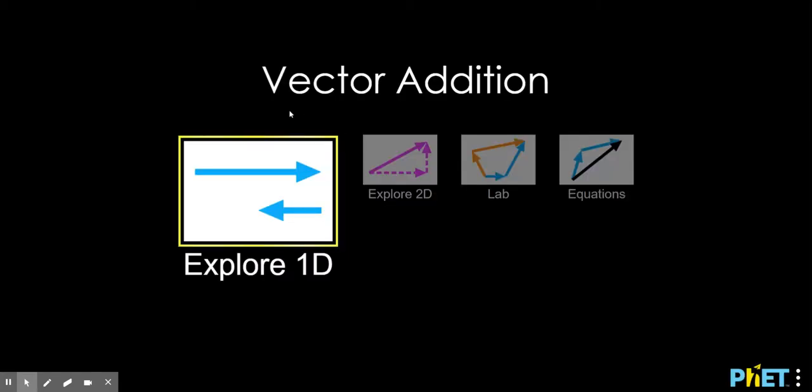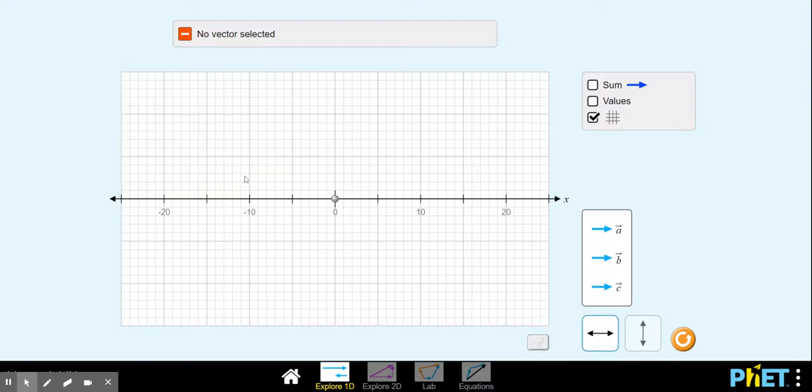We're going to start with Explore 1D. So if you click on that, then it brings you to a one-dimensional grid, a line, it's one-dimensional, where you can drop in vectors. If I pick up this vector here, A, I can drop in Vector A, and by clicking the arrowhead, the tip of the vector, I can change A's length. I can make it positive, I can make it negative, I can send it back and forth. And then you notice up at the top that it gives you the magnitude, the components and the angle of that vector A.